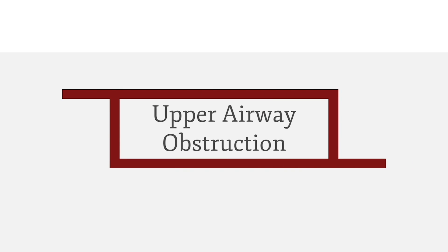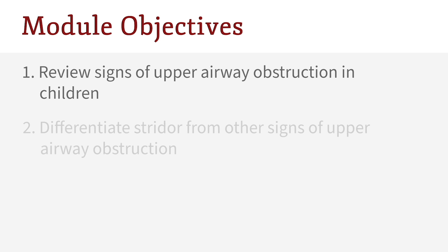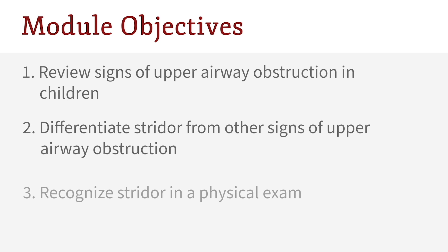Upper Airway Obstruction. In this module, you will learn to recognize upper airway obstruction. The first objective is to review the signs of upper airway obstruction in children. The second objective is to differentiate stridor from other signs of upper airway obstruction. The third objective is to recognize that a child has stridor based on a physical exam.